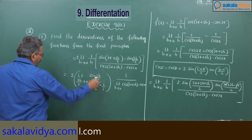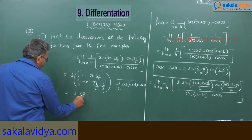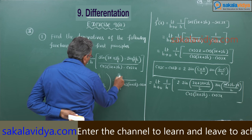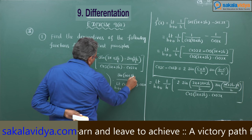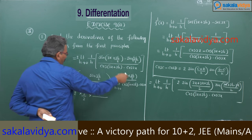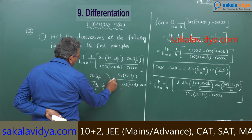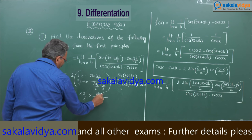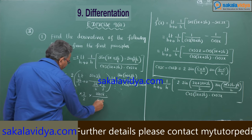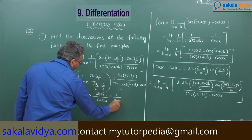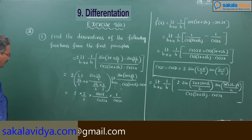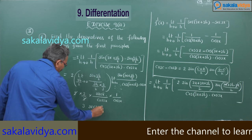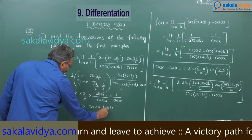As theta tends to 0, sin(theta)/theta equals 1. So sin(3h/2)/(3h/2) tends to 1, giving a factor of 3/2. With h tending to 0, sin((3x plus 3h)/2) becomes sin(3x). This becomes sin(3x) by cos(3x) into 1 by cos(3x). The 2s cancel, leaving 3 · (1/cos 3x) · (sin 3x / cos 3x), which is 3 · sec(3x) · tan(3x).